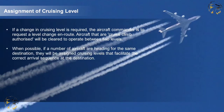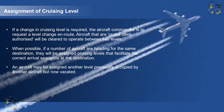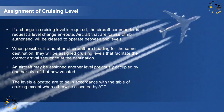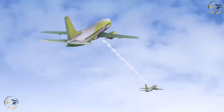Aircraft that are cruise climb authorised will be cleared to operate between two levels. When possible, if a number of aircraft are heading for the same destination, they will be assigned cruising levels that facilitate the correct arrival sequence at the destination. An aircraft may be assigned another level previously occupied by another aircraft but now vacated. The levels allocated are to be in accordance with the table of cruising levels, except when otherwise allocated by ATC. Pilots in direct communication with each other may, with each other's concurrence, be cleared to maintain a specified vertical separation between their aircraft during ascent or descent.